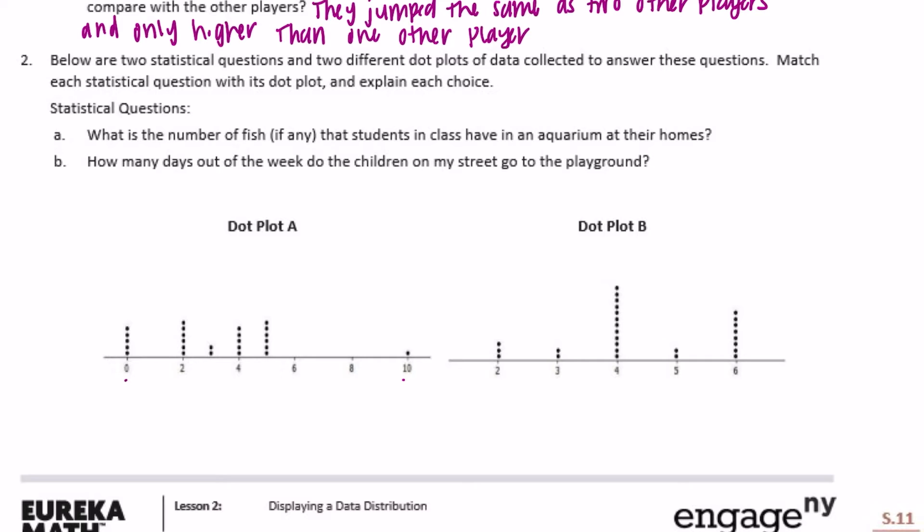So we need to see which one is more realistic. Right off the bat I'm thinking zero to ten is probably more realistic because I wouldn't think everyone in the class would have fish. I mean I don't have an aquarium so I would be zero. Whereas on dot plot B everyone has at least two fish. But let's look at B: How many days of the week do the children on my street go to the playground?